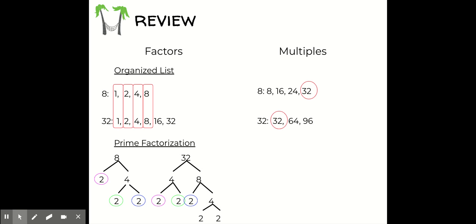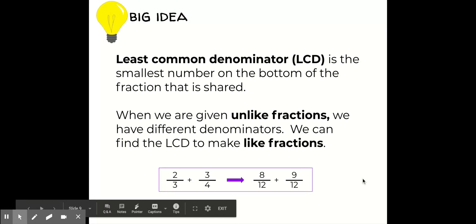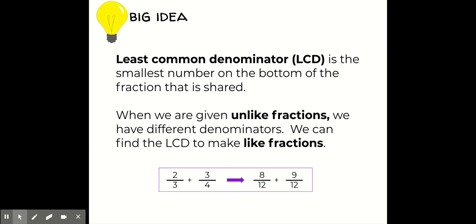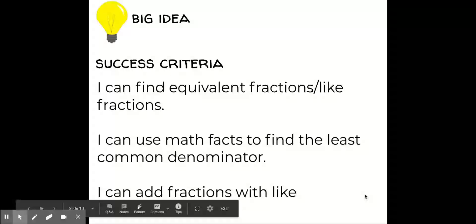I also want to review ways that we can find multiples. There are different ways to find common multiples: we can make organized lists, use prime factorization, or just list out the multiples like I did. Our big idea for today is to understand that the least common denominator, the LCD, is the smallest number on the bottom of the fraction that is shared. When we have unlike fractions with different denominators, we find the LCD to make like fractions — for example, changing two thirds and three fourths to eight twelfths and nine twelfths makes adding easier.